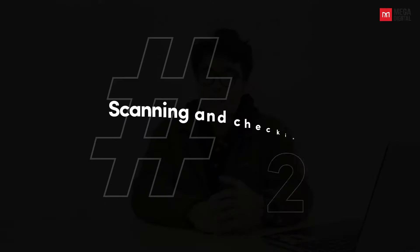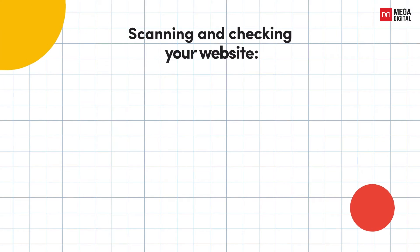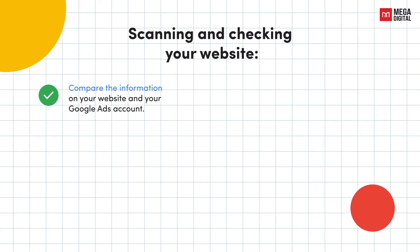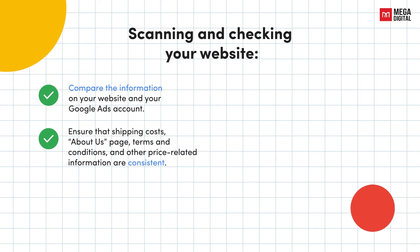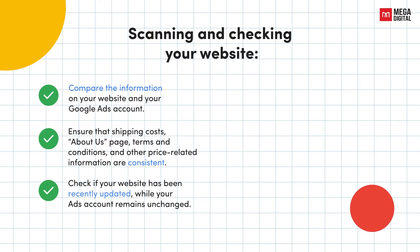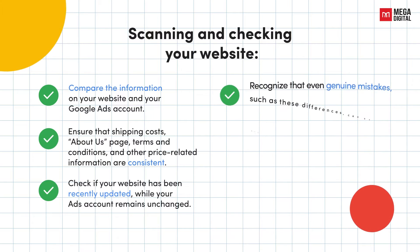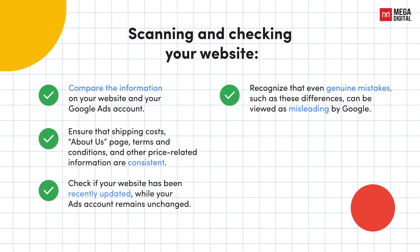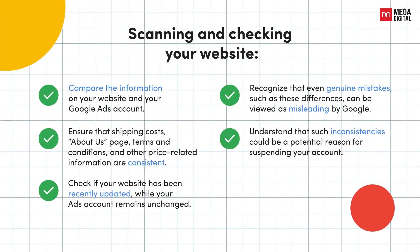The next big step is to take action on what needs to be changed by scanning and checking your website to find out whether you have been hacked. If not, move on to the next steps. First, compare the information on your website and your Google Ads account. Next, ensure that shipping costs, about us page, terms and conditions, and other price-related information are consistent. You should also check if your website has been recently updated while your Ads account remains unchanged. Recognize that even genuine mistakes, such as these differences, can be viewed as misleading by the Google Team, and such inconsistency could be a potential reason for suspending your account.